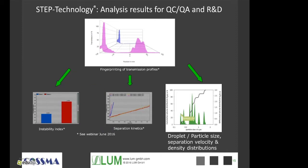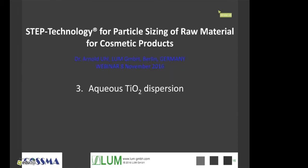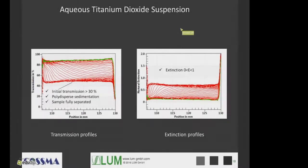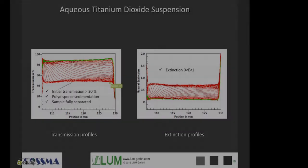We are also able to get from the transmission profiles the particle size distribution curves. First of all, I would like to discuss this briefly on the example of an aqueous titanium dioxide dispersion. We see in this slide here, to the left, the transmission profiles telling us the amount of light passing through our dispersion. In the beginning we have a curve with a value almost at all positions of about 50 percent transmission.